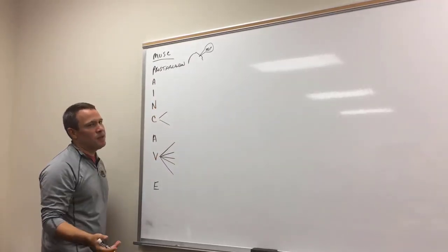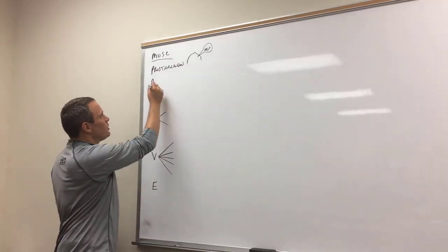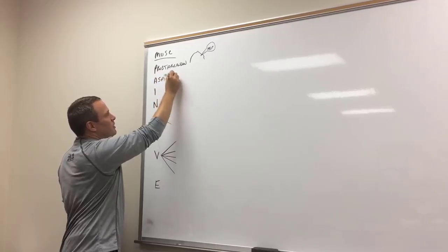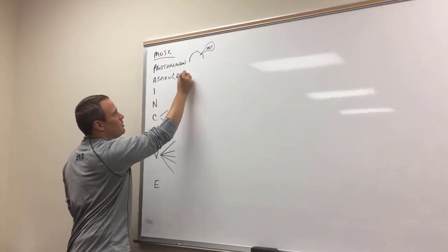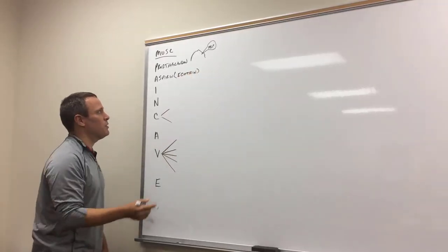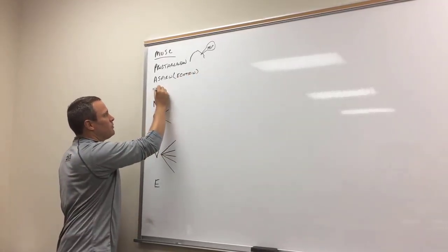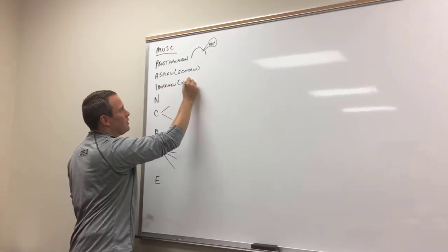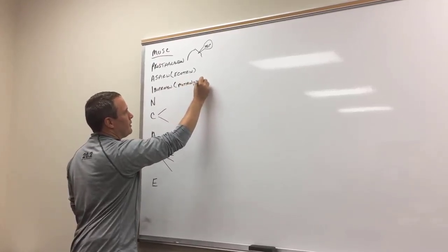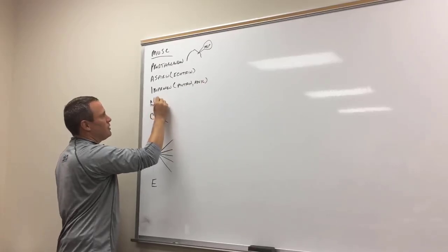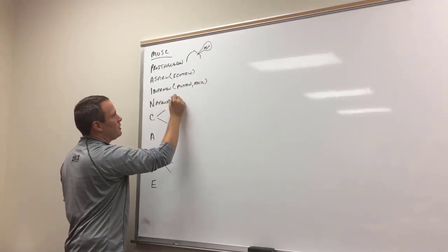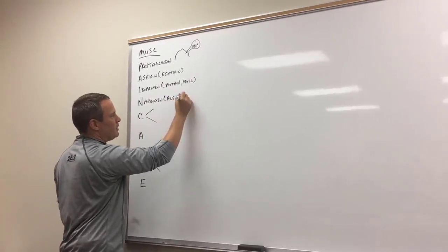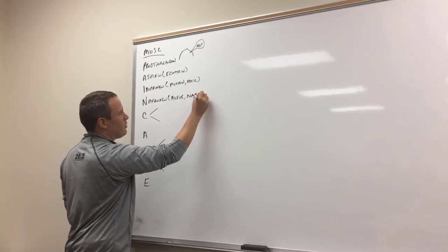We'll start with the NSAIDs. You've got aspirin, and there are as many brand names that you can use, but we'll use Ecotrin, which is enteric-coated aspirin. You've got ibuprofen, which is Motrin or Advil, and then we've got naproxen, which is Aleve over-the-counter, like alleviate your pain, and then it's naproxen, brand name Naprosyn, by prescription.